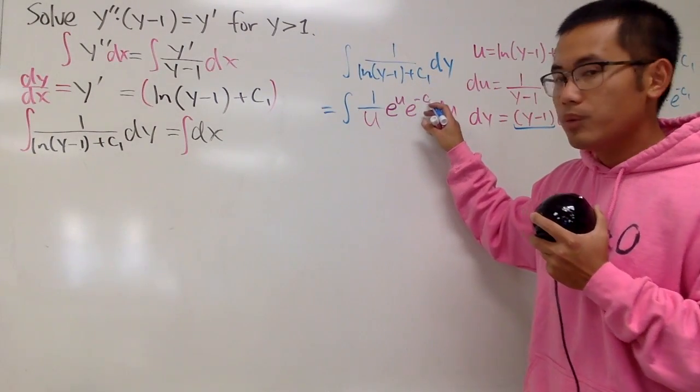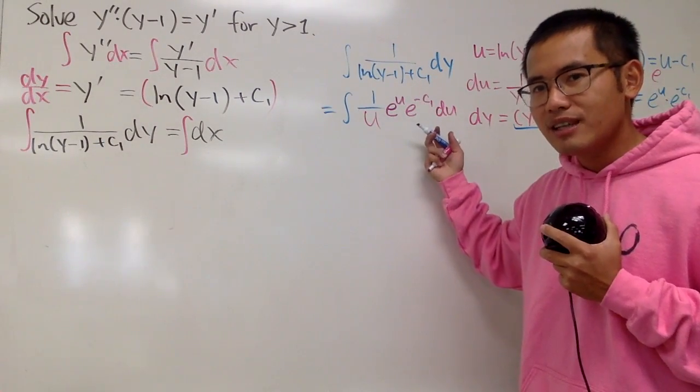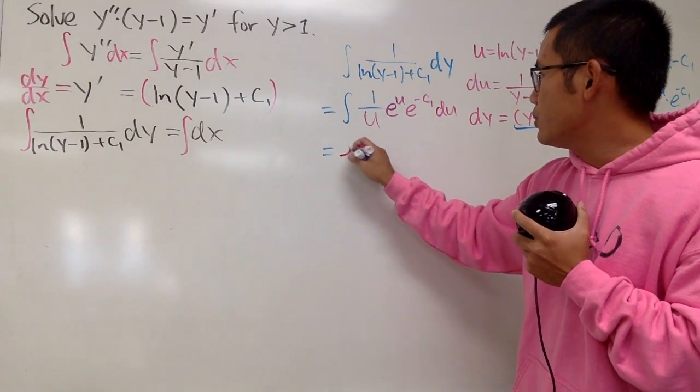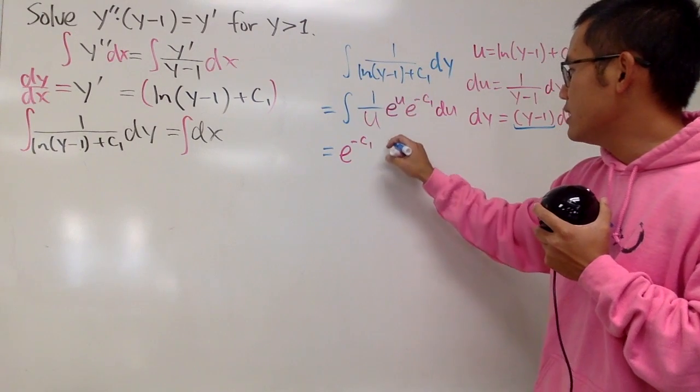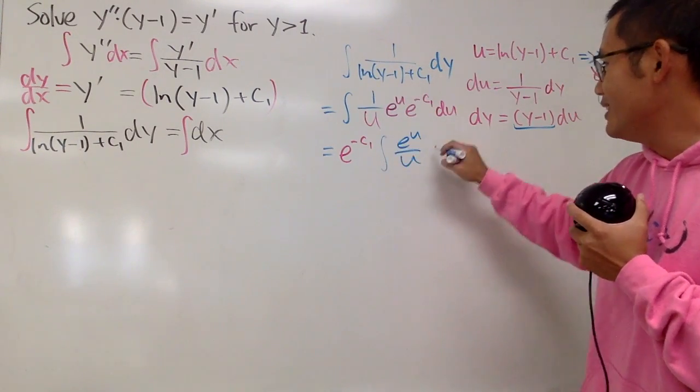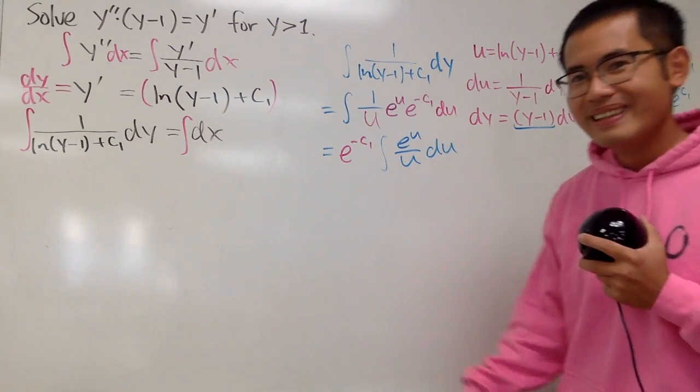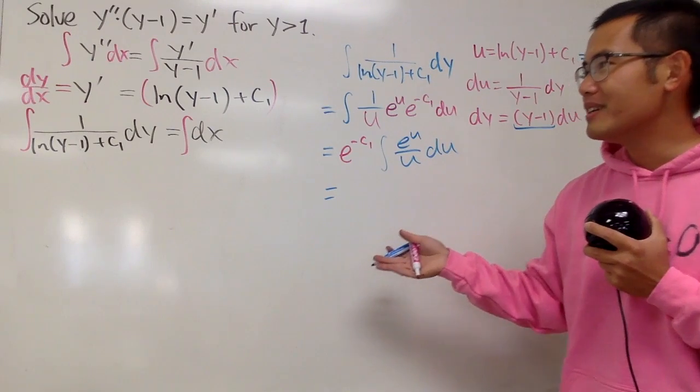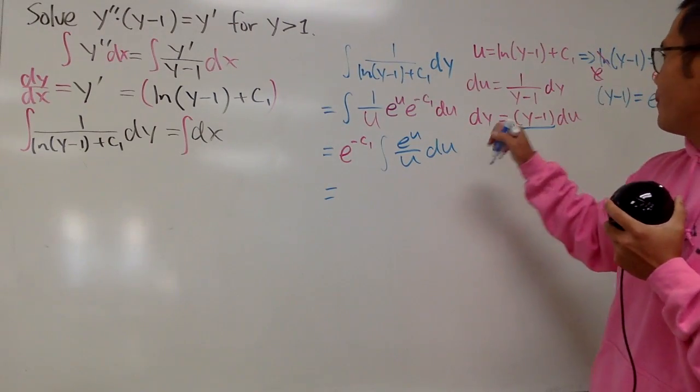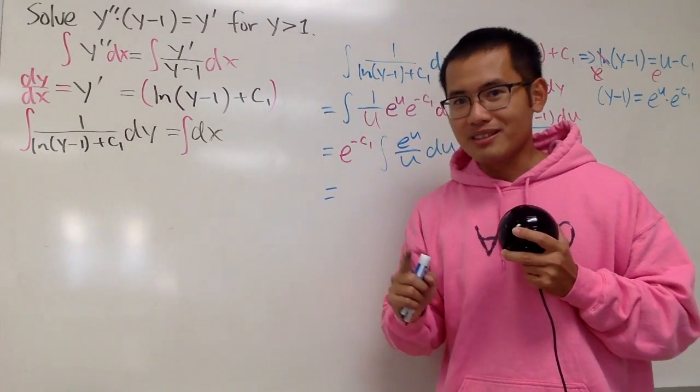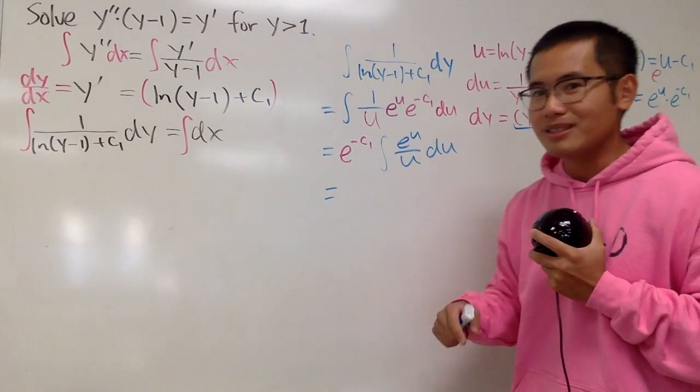Notice, e to the negative c1 is just a constant, we can just put that in the front, so we have e to the negative c1, and let's integrate. This right here is just e to the u over u in the u world. This right here, don't write it down as a c2 though, because this right here is c1, and for now, we only have one constant, so I will really have to keep it as what it is.